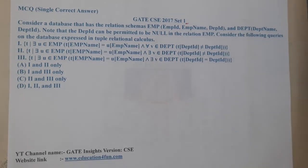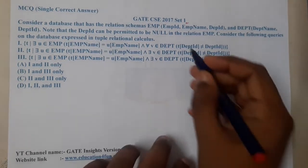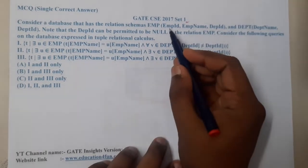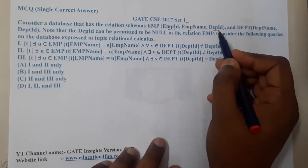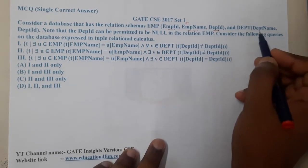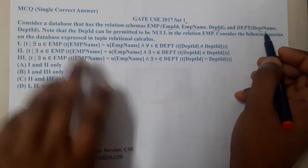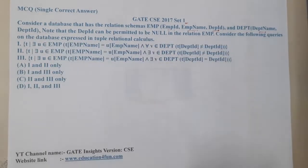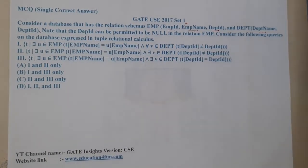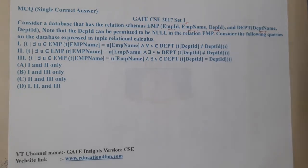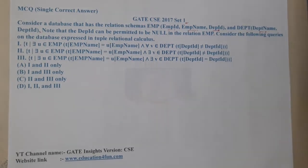...has a relational schema EMP, which has emp_id, emp_name, and department_id. And department has department_name and department_id. Note that department_id is permitted to be null in the relation EMP.